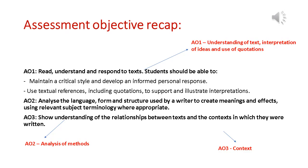Now I'm sure you'll be familiar with the assessment objectives for literature for all of those literature texts that we've looked at so far. So for poetry you'll be assessed on three areas. Assessment objective one is to read, understand and respond to texts. In simple terms that means you've got to understand what the poem is about and you've got to be able to select quotations or evidence to support that.